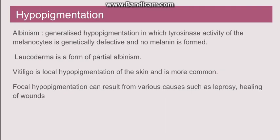Going to hypopigmentation, the first and very important one is albinism — a form of generalized hypopigmentation in which there is a genetic defect in the tyrosinase activity of the melanocytes, so no melanin is formed. Second is leukoderma, a form of partial albinism. Vitiligo is a form of localized hypopigmentation of the skin. Focal hypopigmentation can also be seen in diseases such as leprosy and in scar tissues associated with wound healing.